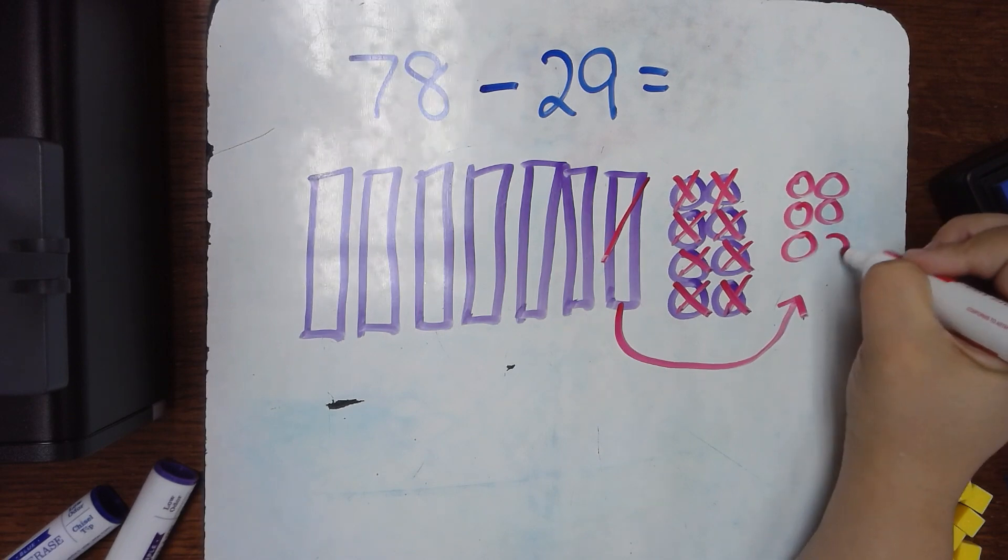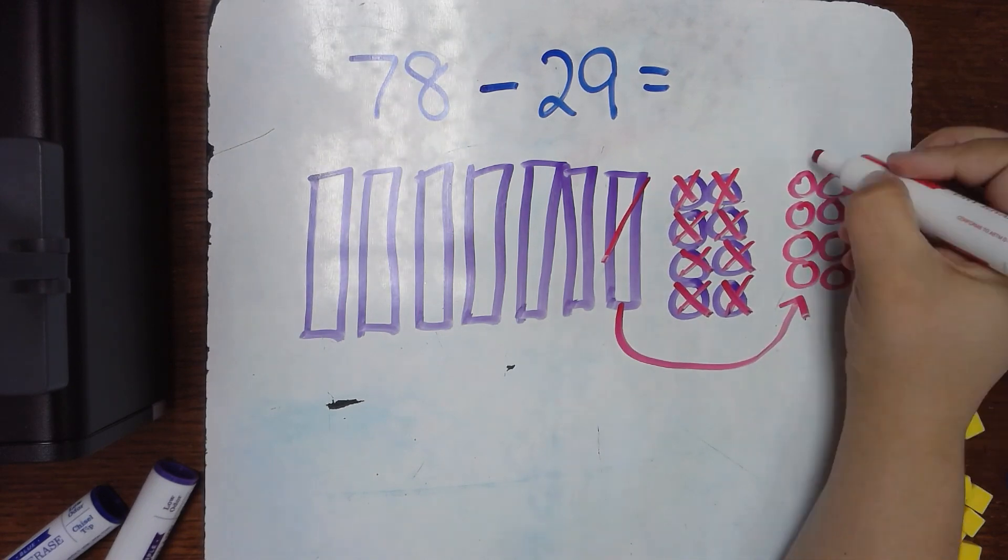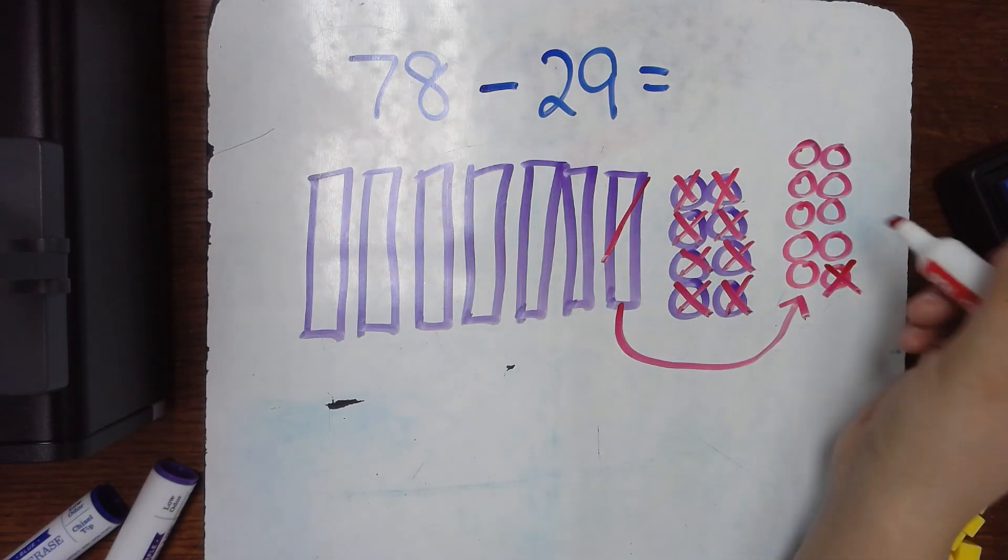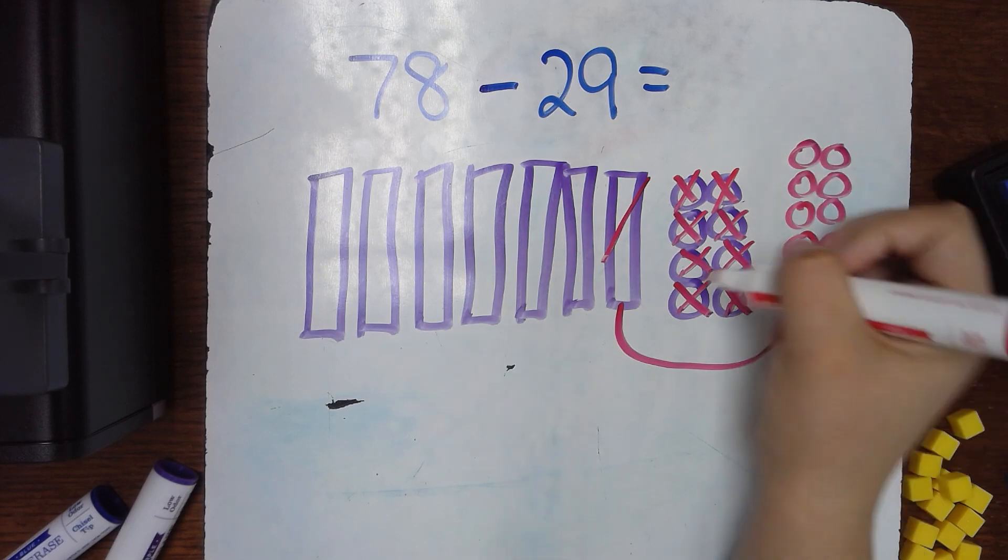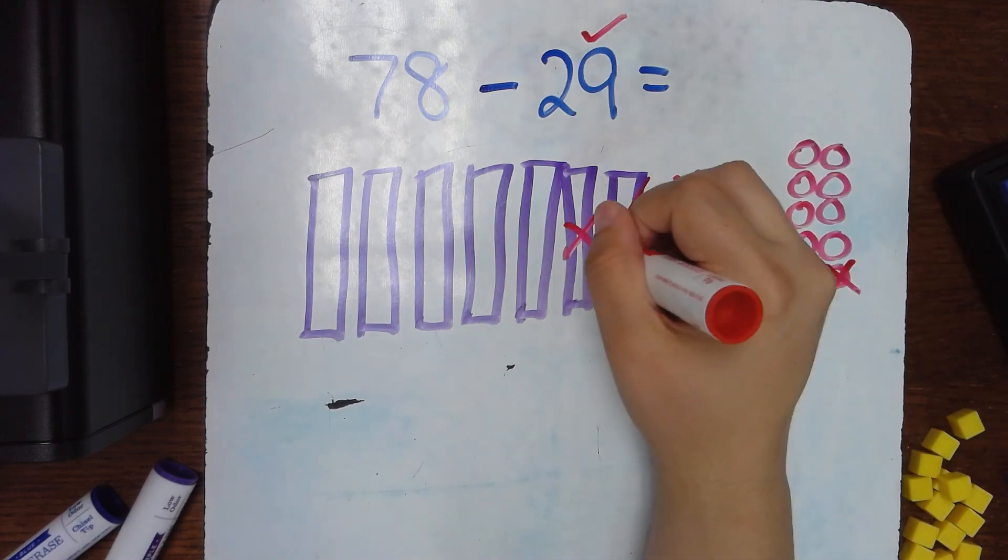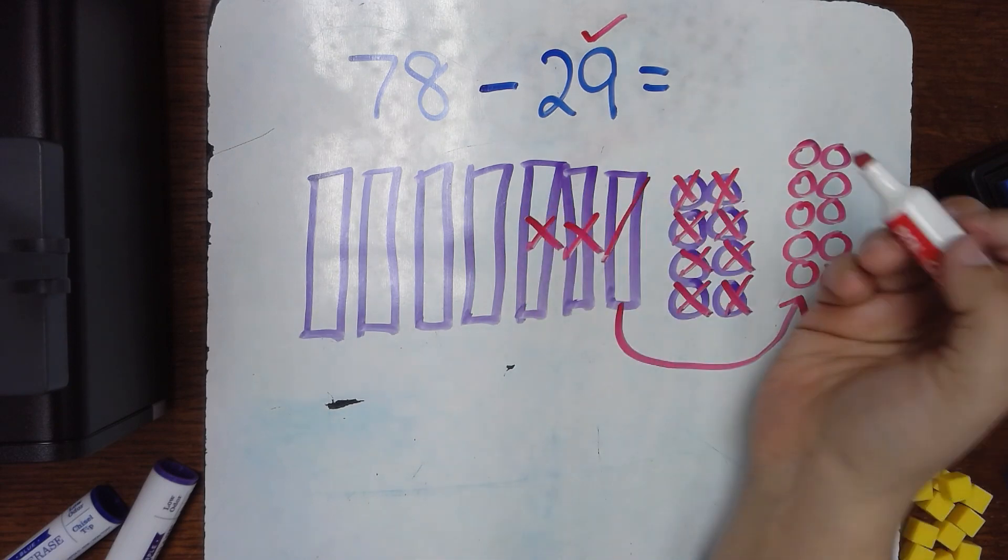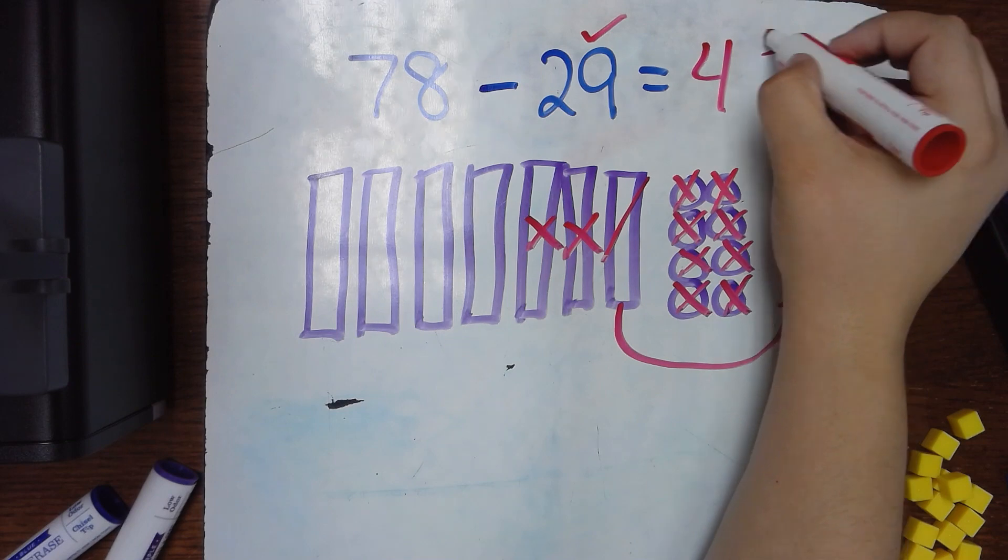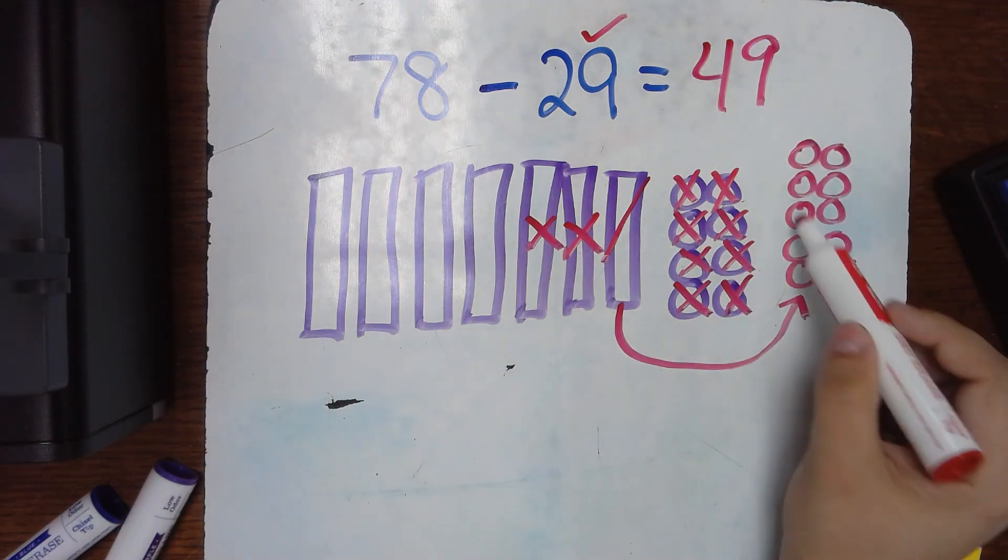The exact same process I just did with the blocks. 2, 4, 6, 8, 10. So now I can subtract one more and now I have my answer of the ones. I'm able to subtract now the tens. 10, 20. Okay. And my answer is still 49. Four tens and nine ones.